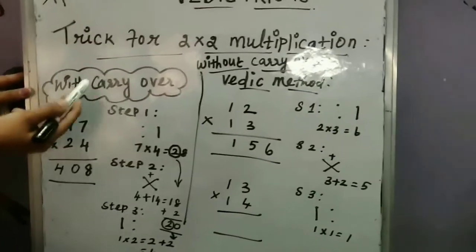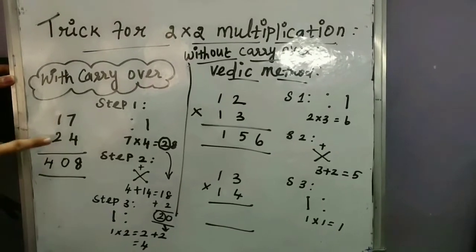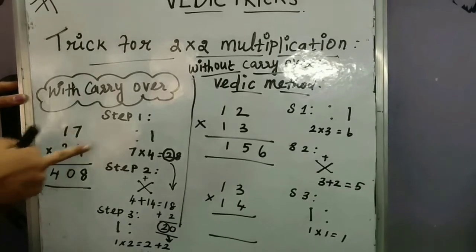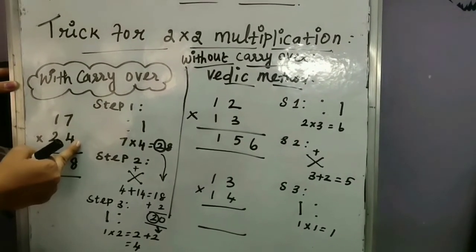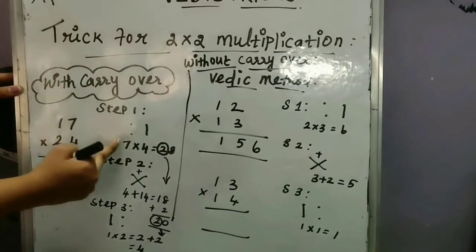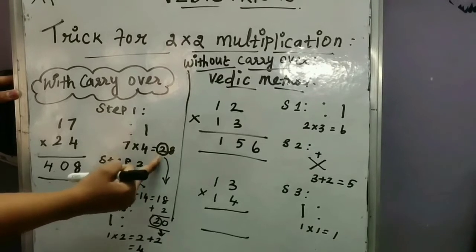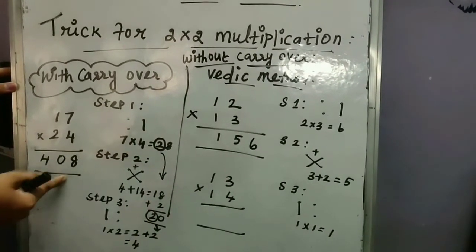When you get the tens place, how to be solved by using this method? That is what with carryover. Now see the example 17 into 24. Now recall the first method: at two dots with two dots, this time this two places. I mean multiply the ones places, 7 into 4 is 28.